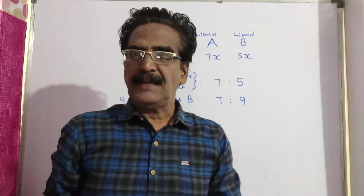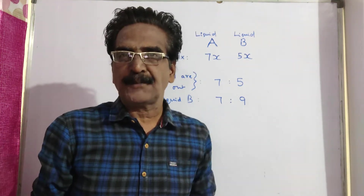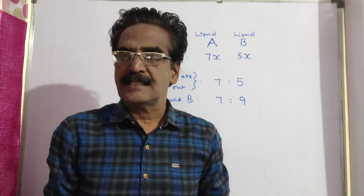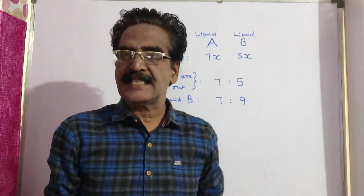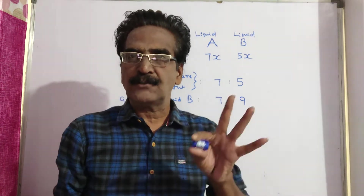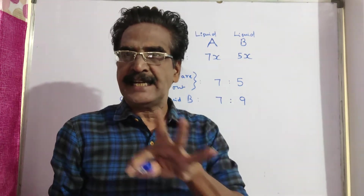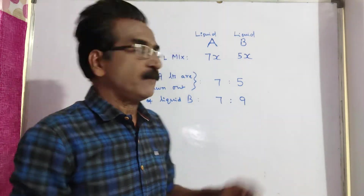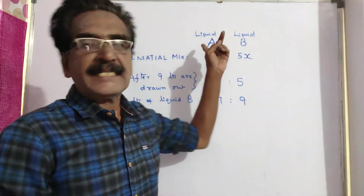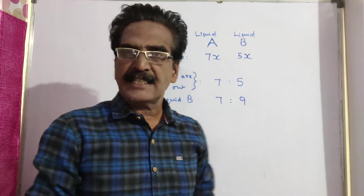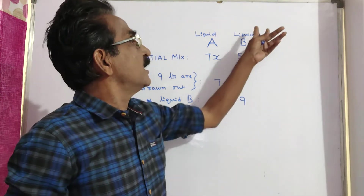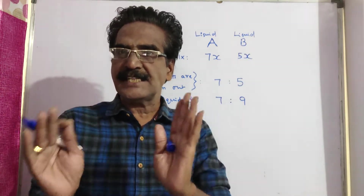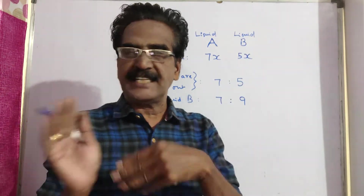Hi friends, good morning. Please look at the next problem in alligation and mixtures. A can contains a mixture of 2 liquids A and B in the ratio 7 is to 5. That means liquid A is 7x liters and liquid B is 5x liters. This is the initial position.